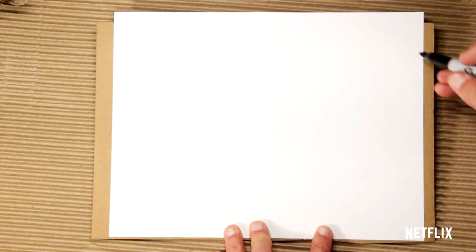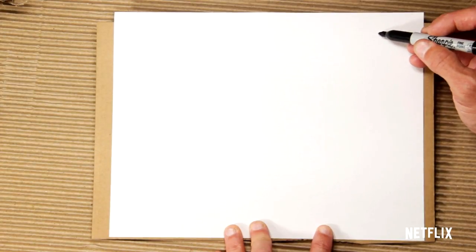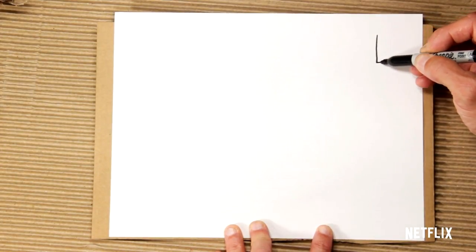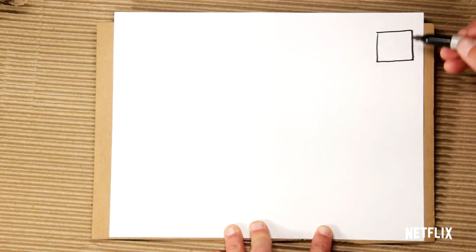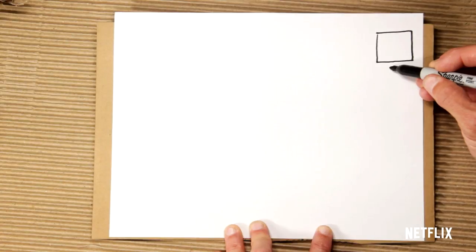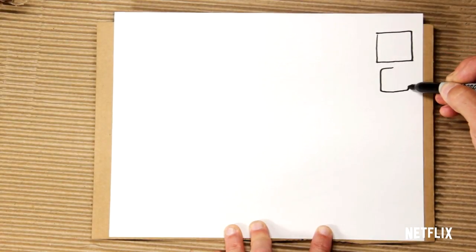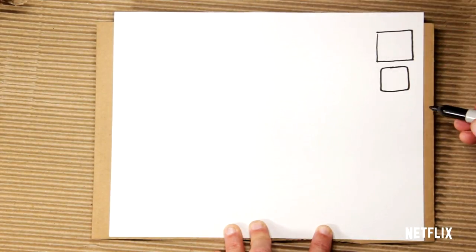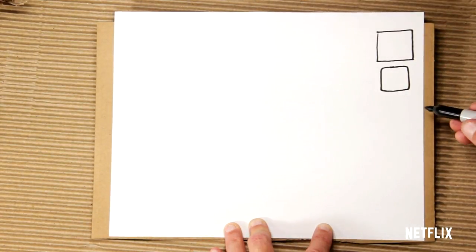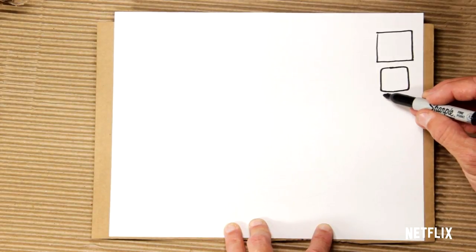Okay, so the main shapes we're going to be using for Trash Truck are squares. Squares like this, squares like this, little rounded edges. So it's round, not sharp. And rectangles.